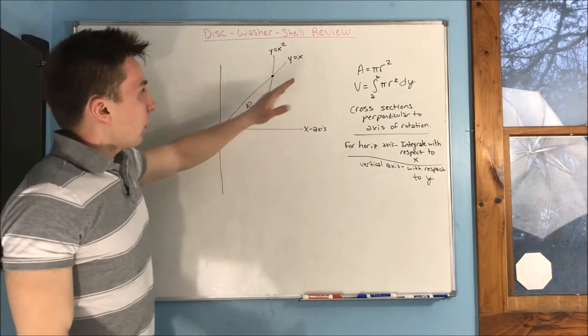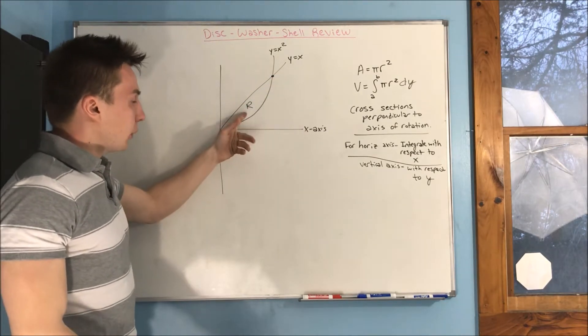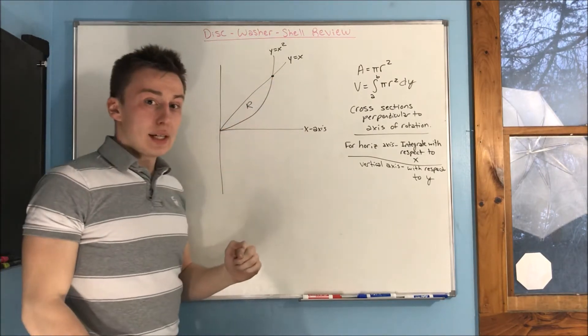All right, so for washer method, we have y equals x squared and y equals x. We have a region between these, and we want to rotate that about the x-axis.